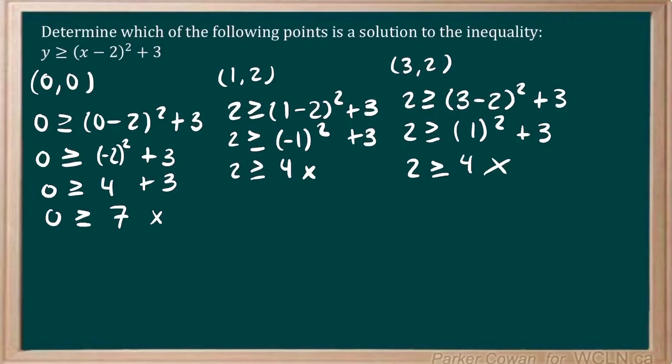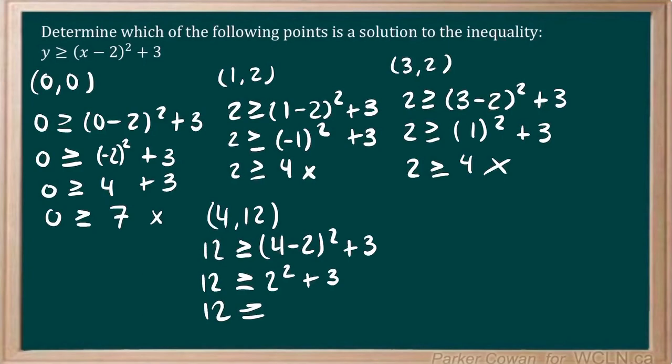And so therefore, we can tell that the last one, (4, 12), will be correct because we have no other options. But let's just plug it in just to be sure. So we have 12 ≥ (4 - 2)² + 3. So 4 minus 2 is 2, squared plus 3. So we have 12 ≥ 4 + 3, which is 7. And indeed, 12 ≥ 7. It is greater than 7. And so that is our set of points that satisfies the inequality.